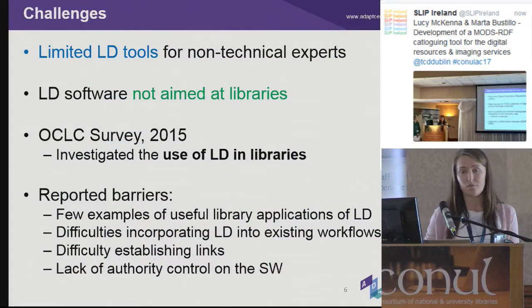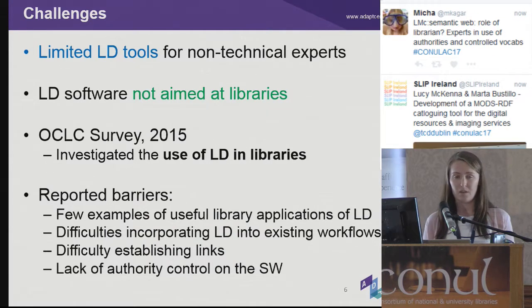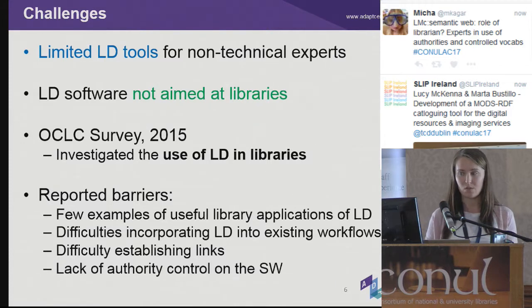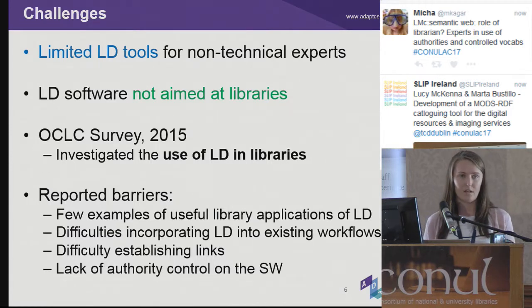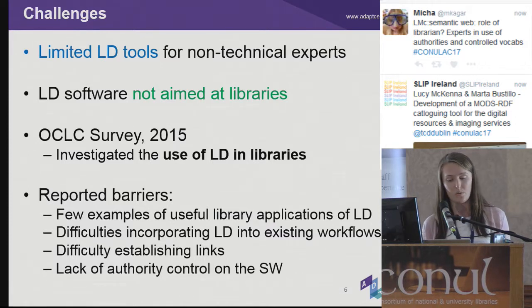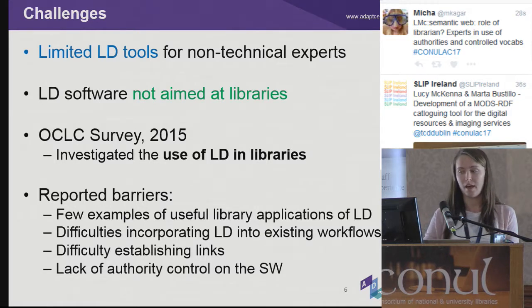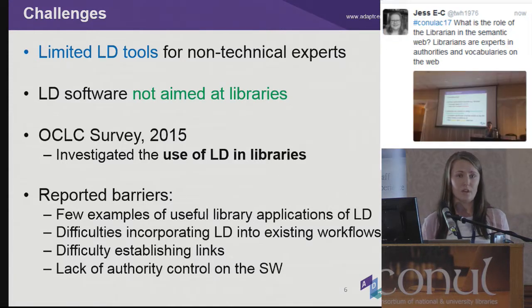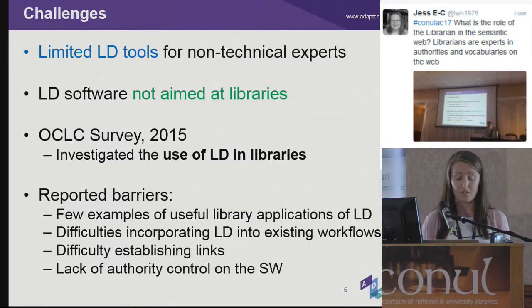However, there are a number of challenges for libraries in participating in the semantic web. One is that there are limited tools for non-technical experts, and the tools that are available aren't aimed at the needs of libraries. In 2015, OCLC did a survey investigating the use of linked data in libraries. Benefits reported included exposing data to a larger audience, enhanced metadata, and improved search accuracy. However, librarians also reported a large number of barriers, including few examples of useful library applications of linked data — making it hard to justify the time and resources — and difficulty incorporating linked data into existing workflows.